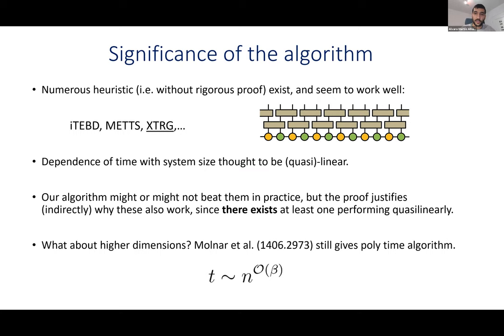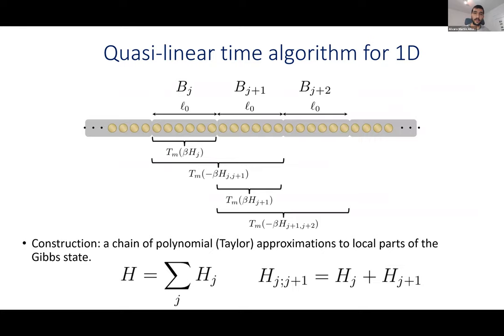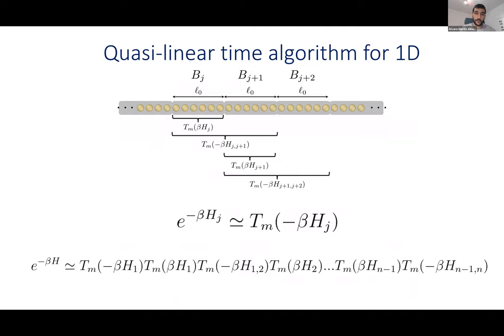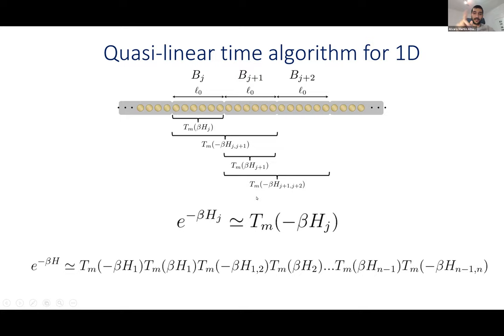For higher dimensions, the best result remains a polynomial time algorithm, and we couldn't improve it for higher dimensions — maybe other techniques will be useful. Let me quickly describe how we do it and how it relates to the area law proof. We have a one-dimensional Hamiltonian — a chain — and we divide it into chunks or blocks of a certain length l₀. Given the Hamiltonian divided into chunks, we then look at each block.